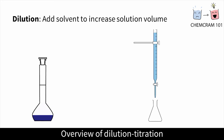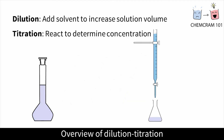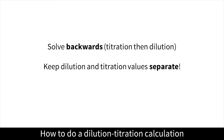Here's the first variation on a titration calculation: a sequential dilution then titration. In this type of question, a concentrated solution is first diluted, then a titration is performed. You need to work out the original concentration. You'll have to work backwards to get the answer since you don't have all the values you need to solve the dilution at the beginning. The most common issue with this sort of question is that there are a lot of volumes, so it can get really confusing to work out which number to use.